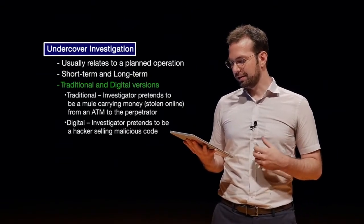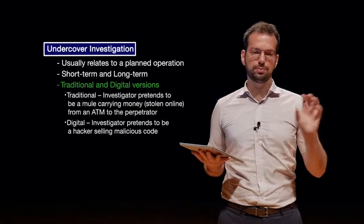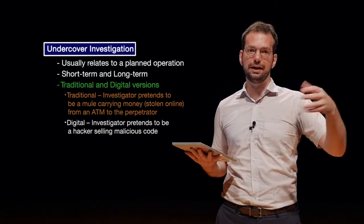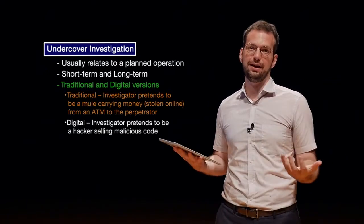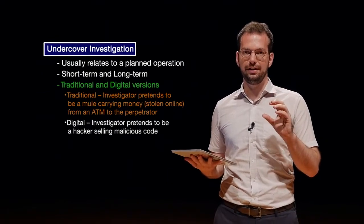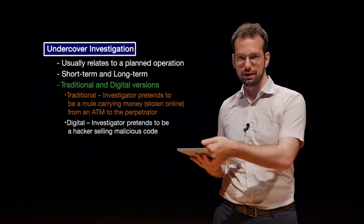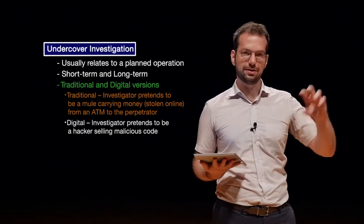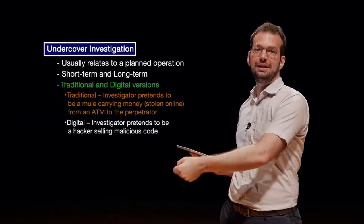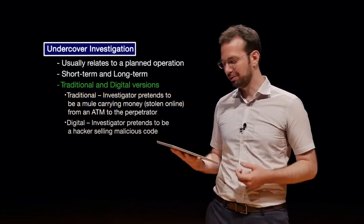Traditional undercover: the investigator pretends to be, for example, a money mule carrying money. The money was potentially stolen online, but we have to take that money from a bank account and actually turn it into cash. A traditional form could be that I'm pretending to be a money mule working with the suspect to transfer the money to them — the suspect steals the money online, I take the money out of an ATM and physically give it to the suspect. In that case, I may be able to arrest the suspect in the real world.